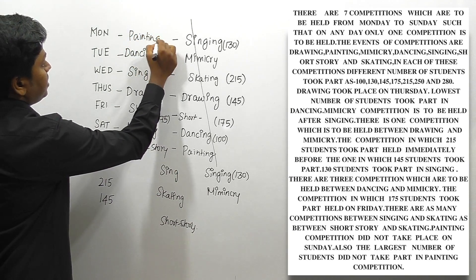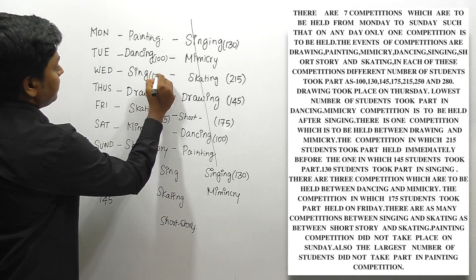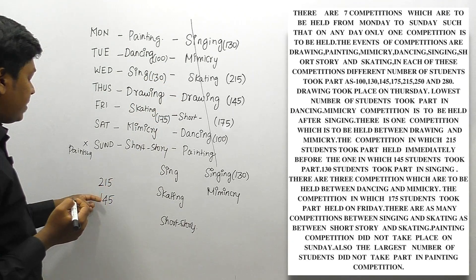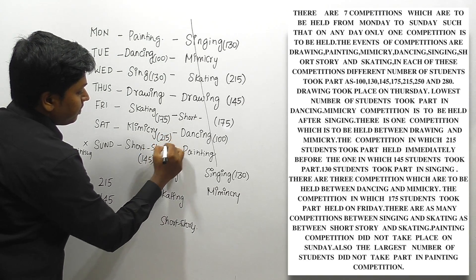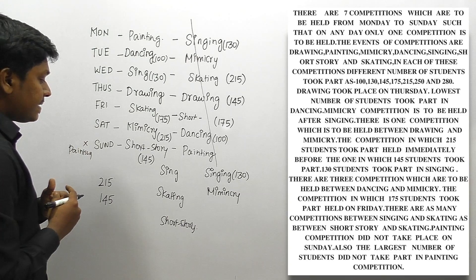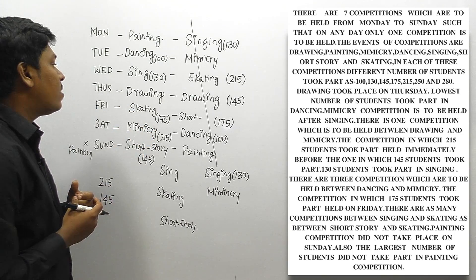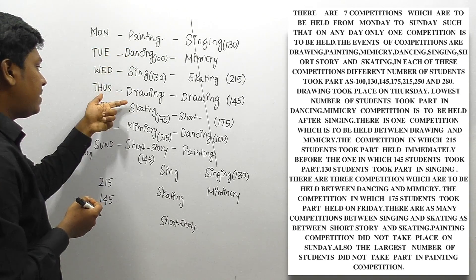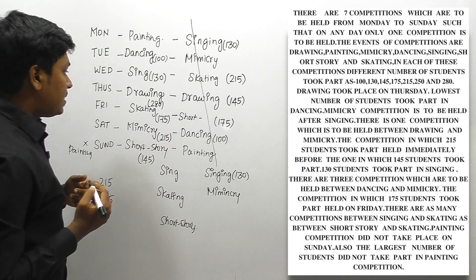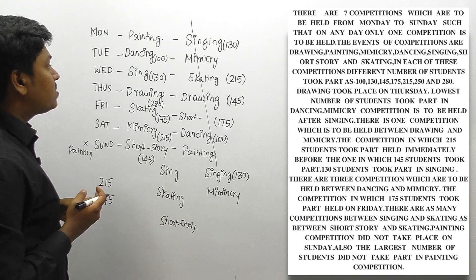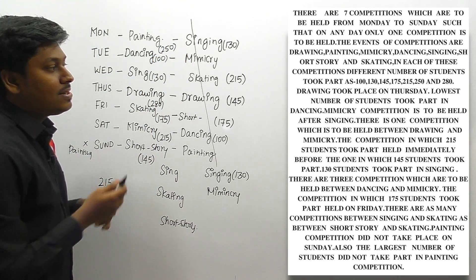Now we assign student numbers. Singing gets 130. Immediately before 145 must be 215, so those are placed accordingly. Drawing and painting remain. The largest number of students — 280 — did not take part in painting, so 280 belongs to drawing. The remaining number, 250, is assigned to painting. The arrangement number 20 is now fully solved.